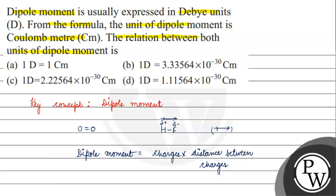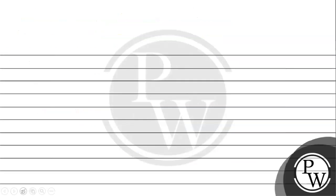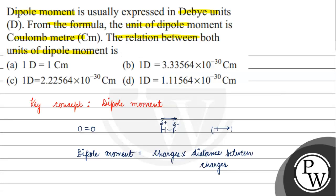So dipole moment is in coulomb meter. The relation between the two units is: 1 Debye equals 3.33564 × 10⁻³⁰ coulomb meter. Coming back to the question, Option A: 1 Debye equals 1 coulomb meter. Option B: 1 Debye equals 3.33 × 10⁻³⁰ coulomb meter. So the correct answer is Option B.